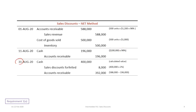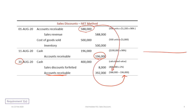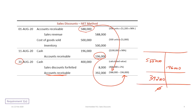On August 31st, the remainder of the receivable is paid. We credit accounts receivable for the remaining balance. Looking at the T-account: we have a $588,000 debit from the sale and a $196,000 credit from the earlier collection, leaving a balance of $392,000 which must be reduced to zero. So we need a credit of $392,000.